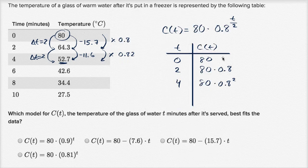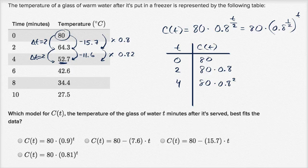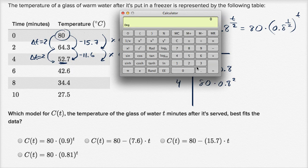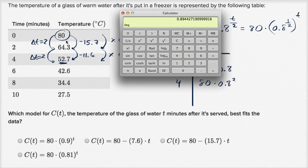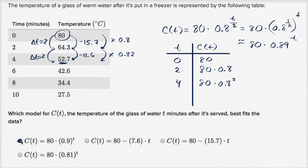This isn't exactly one of the choices. So how do we manipulate this a little bit? We can remind ourselves that this is the same thing as 80 times 0.8 to the 1 half, and then that to the T power. And what's 0.8 to the 1 half? That's the same thing as the square root of 0.8, roughly 0.89. So this is approximately 80 times 0.89 to the T power. And if you look at all of these choices, this one is pretty close to this. This model best fits the data.